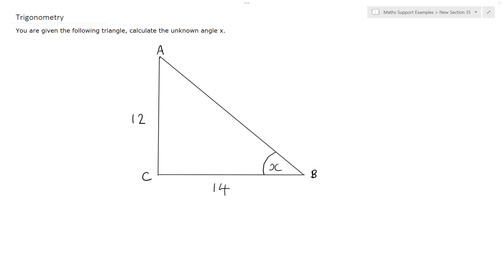For this example we're given the following triangle and we've been asked to calculate the unknown angle x. The first thing we should do with all trigonometry problems is to label the sides.